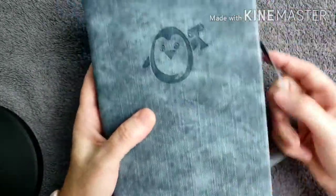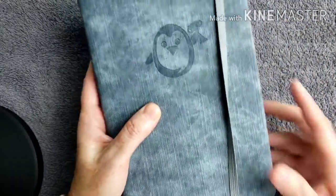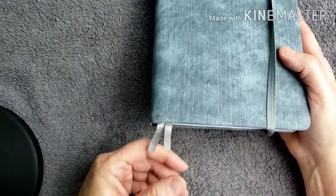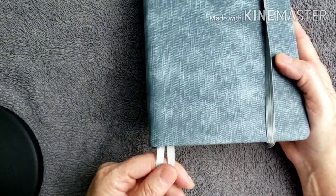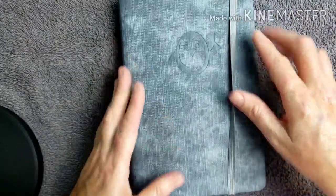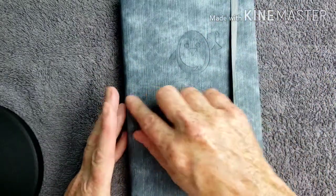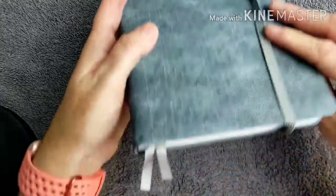There's a nice elastic closure here and two marking ribbons, both gray. It measures about eight and a half inches this way, six inches this way, and it is about one inch thick.